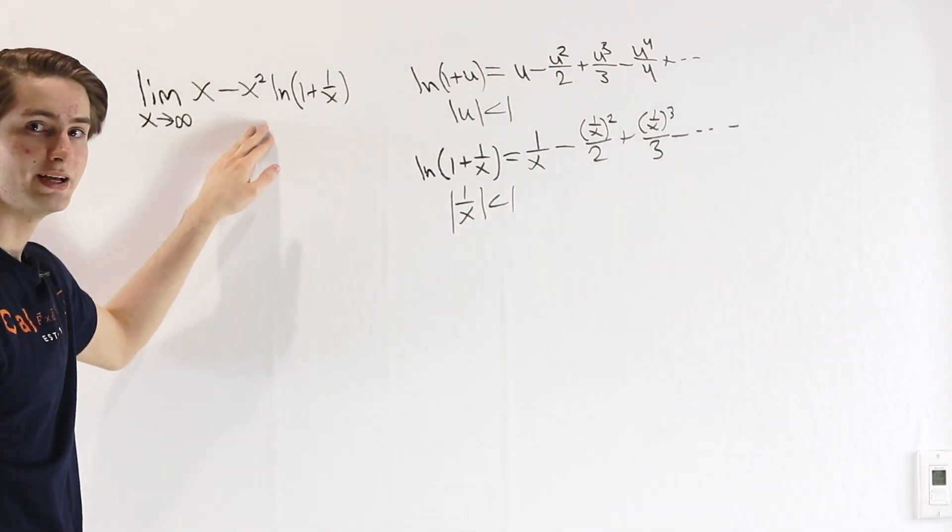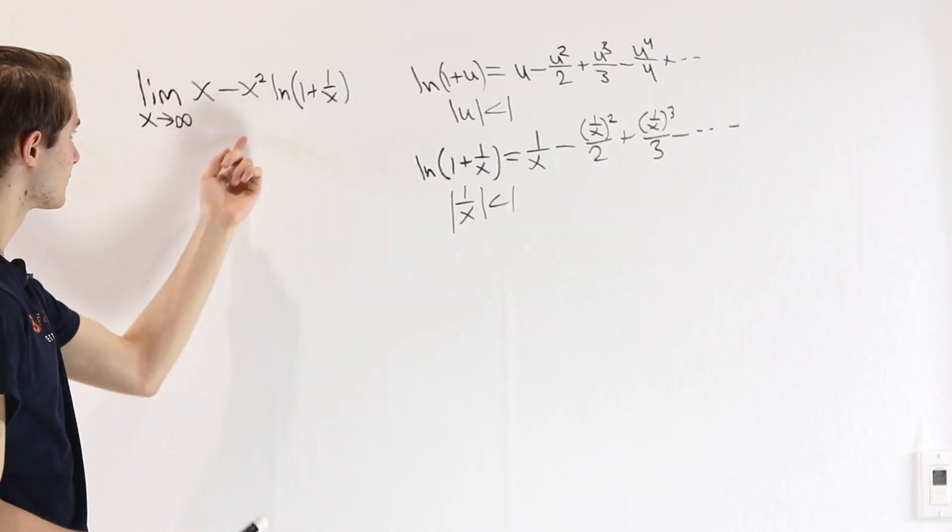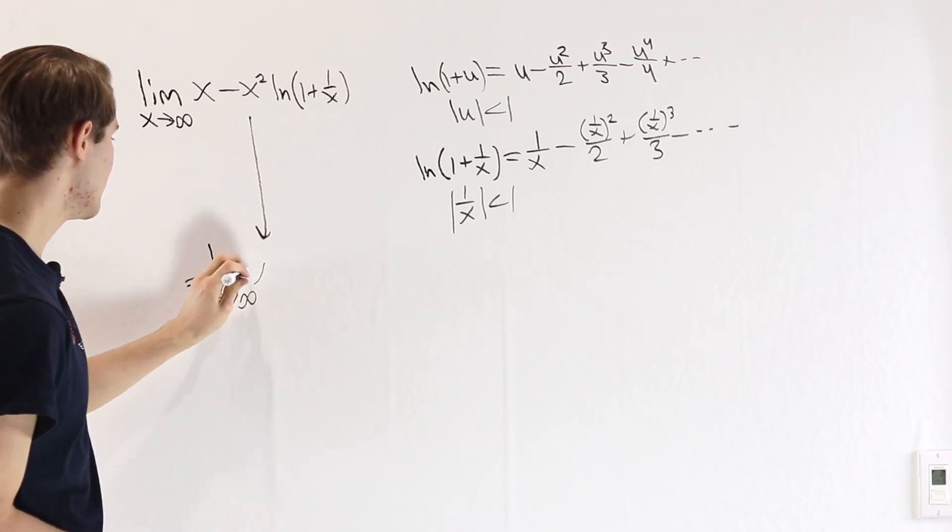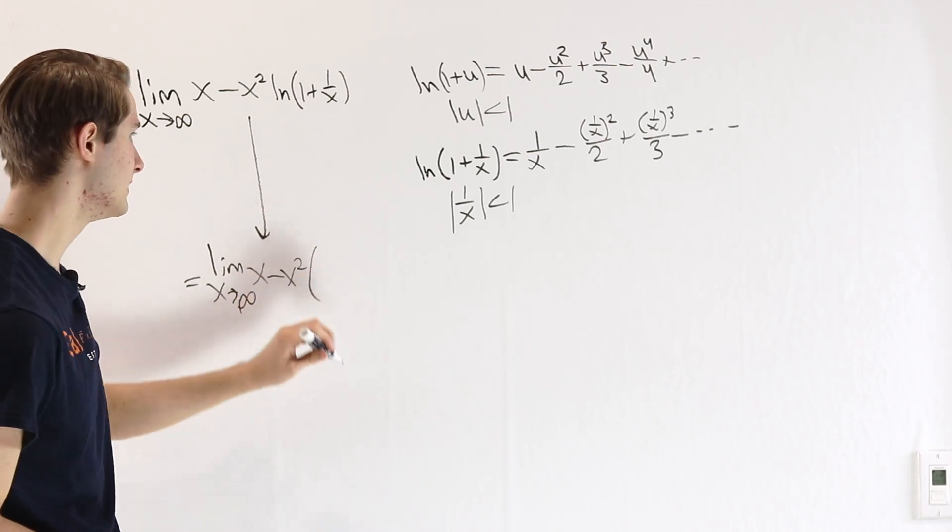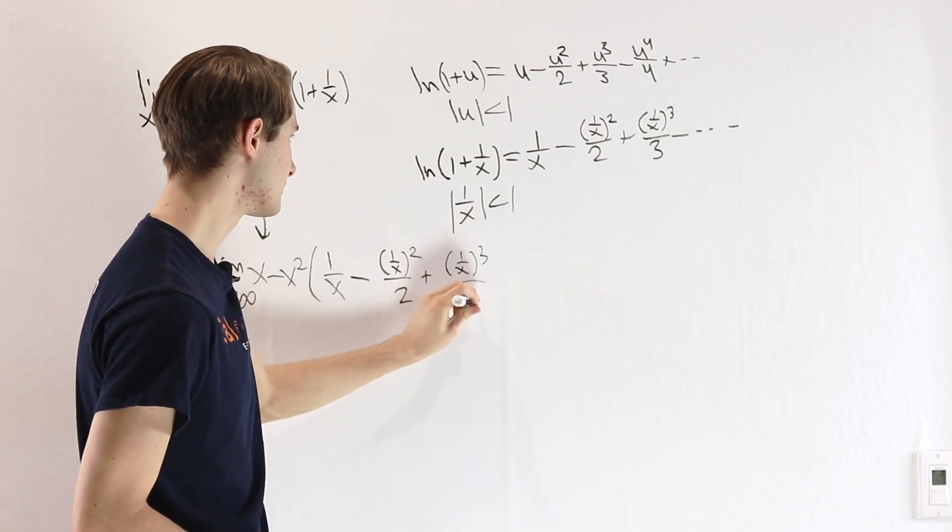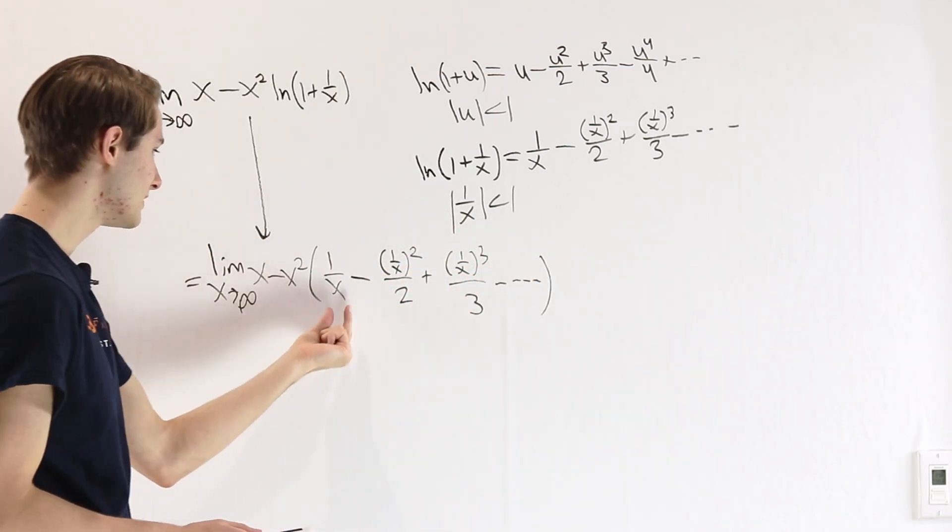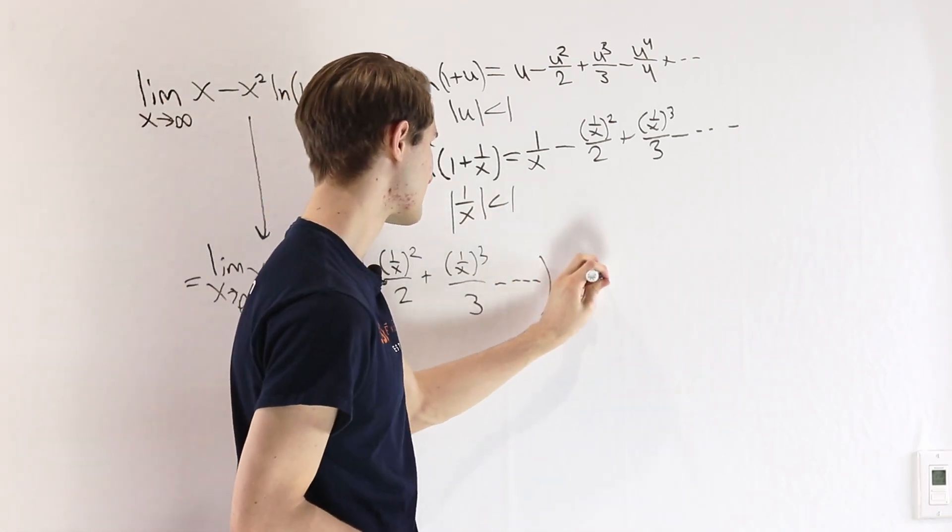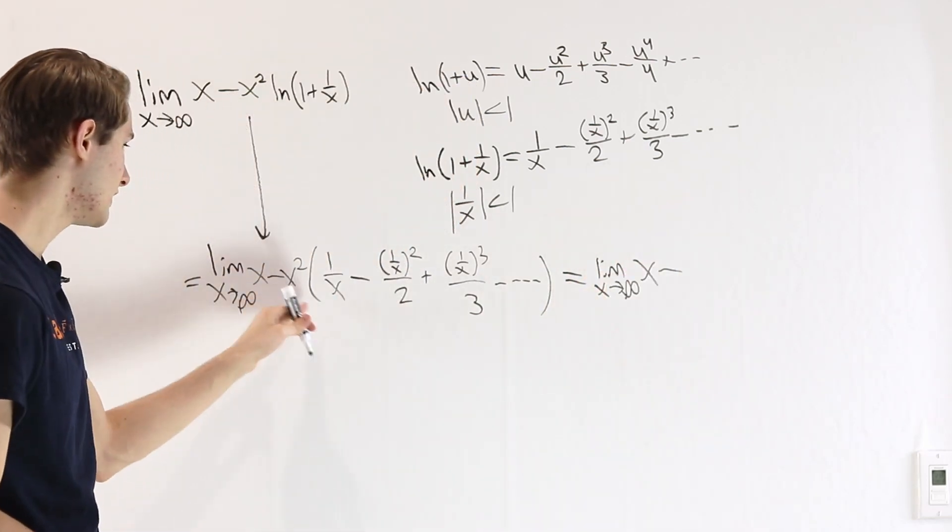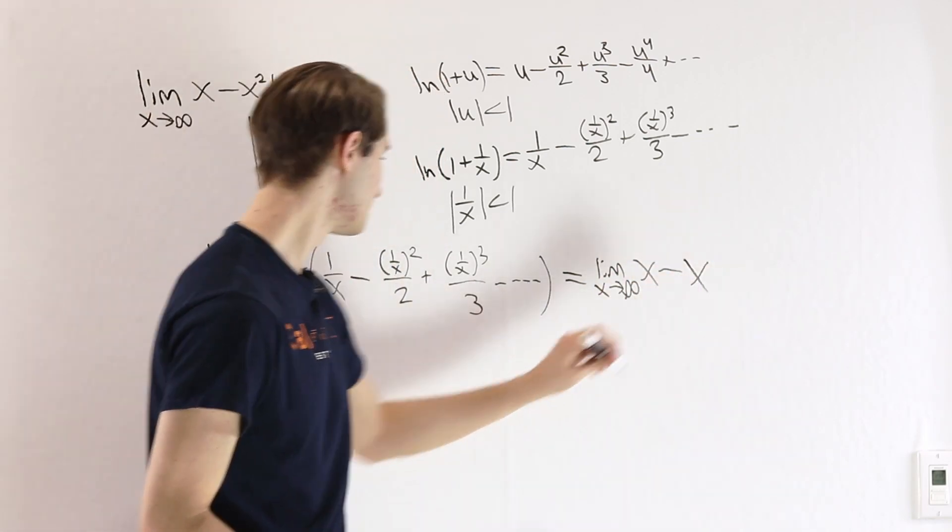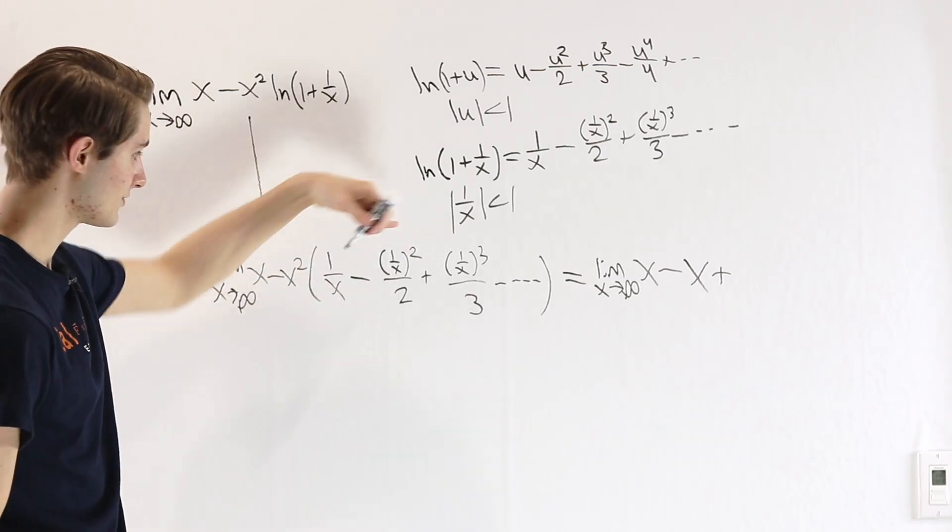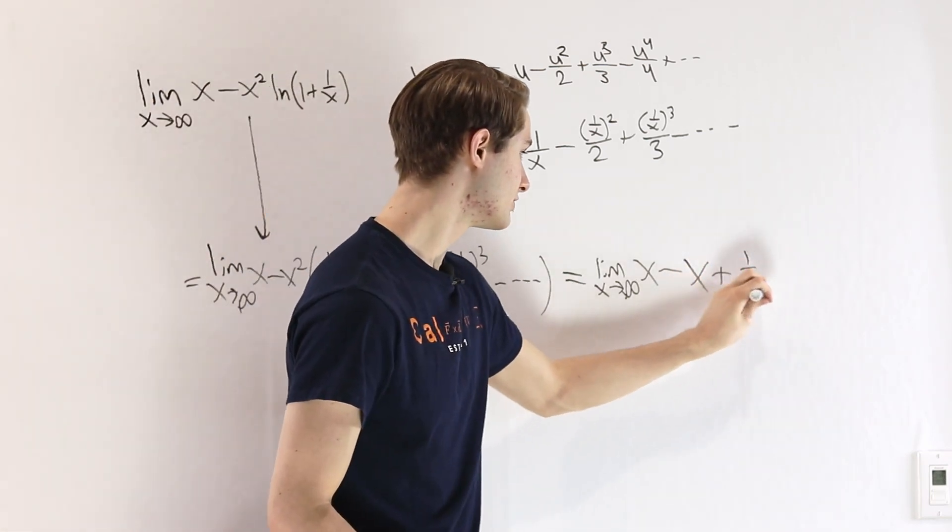Let's see what happens when we plug that in to the expression that we have here. So, our initial expression here is going to equal the limit as x approaches infinity of x minus x squared times this Taylor series expansion. On the inside here, we can multiply x squared through each of these terms to see what our result actually is. We get the limit as x approaches infinity of x minus x squared times 1 over x is going to be x. And then we have minus and minus becomes plus x squared times 1 over x squared is going to be 1. So we have just a 1 half.